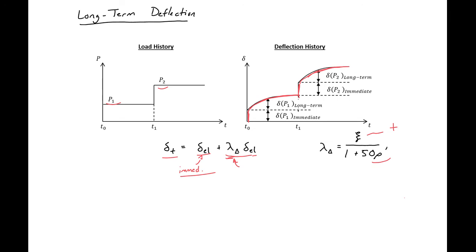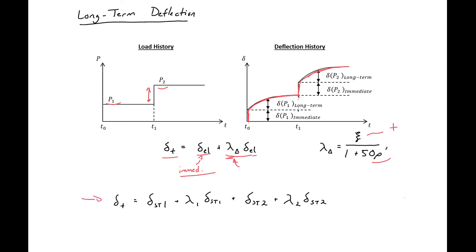For this load history, our delta total would be equal to our delta short-term caused by P1 plus lambda1 times delta short-term 1. Then we add the short-term immediate response delta short-term 2 plus lambda2 times delta short-term 2. If we had other applied loads, we could modify this expression further to find our total deflection.